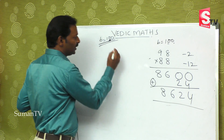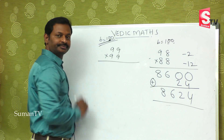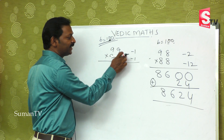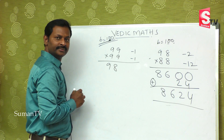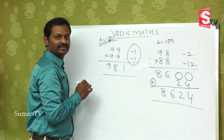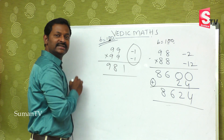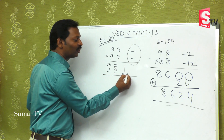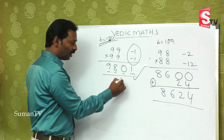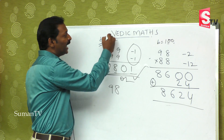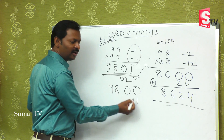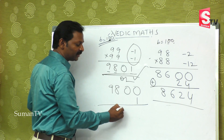Suppose you get 99 multiplied by 99. Minus 1 into minus 1 is plus 1. Four digits are needed for the answer, so one one becomes zero one. The first part is 98, and the second part is 01. So the final answer is 9, 8, 0, 1.